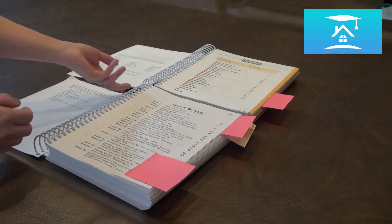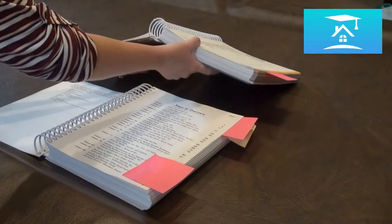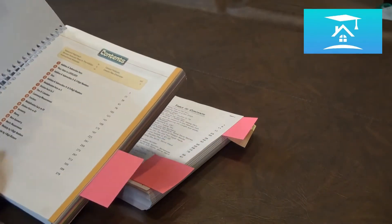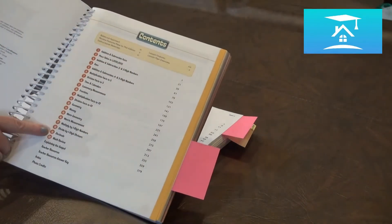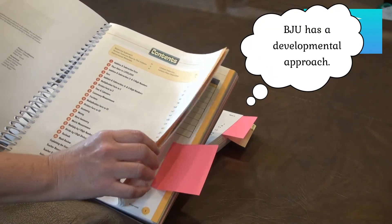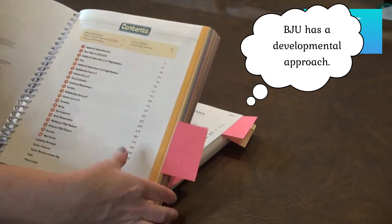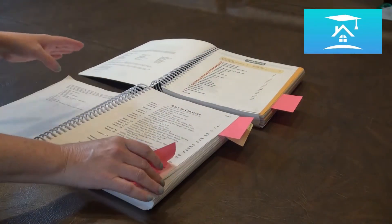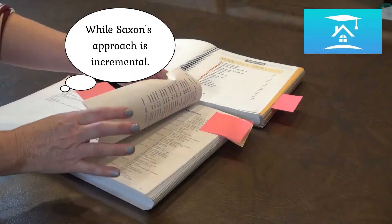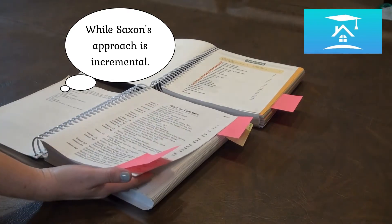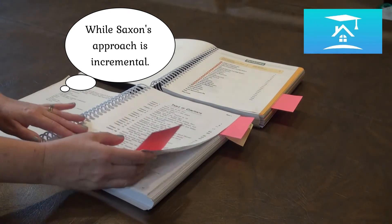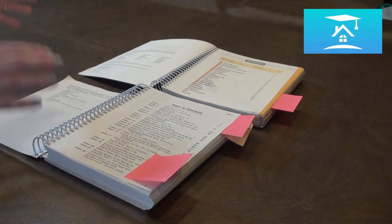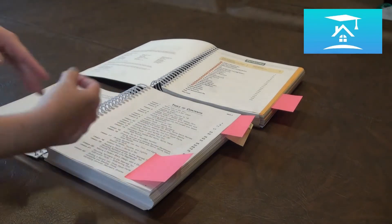The way the books are set up or the programs are set up is a little bit different as well. BJU seems to divide their topics into chapters with a certain number of lessons per chapter, whereas Saxon just lists a total of, I think there's like something like 140 lessons, as opposed to breaking the concepts up into chapters.